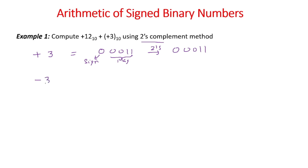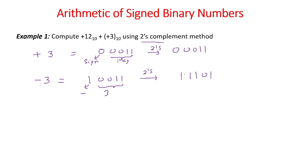Now for minus 3: minus 3 will be represented by 1 0 0 1 1 in signed magnitude — the 1 indicates the negative number and 0011 is the magnitude of 3. To write this in two's complement form, take the two's complement of its magnitude, which is the two's complement of 0011. That gives 1 1 0 1, and the most significant bit stays 1 for the sign. So our number is 1 1 1 0 1, which represents minus 3 in two's complement form.